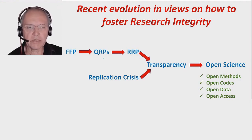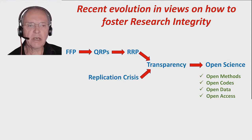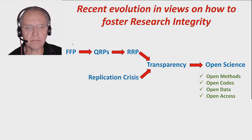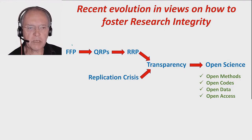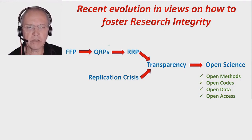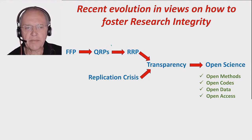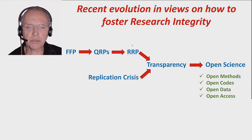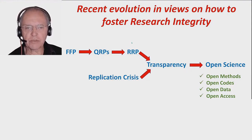And then we sat together and said, well, prevention of questionable research practices is a really important thing to do, although we should never stop detecting the culprits and the rotten apples doing the FFP. But there is also something going on in the aggregates, and we should cure that as well. And then the last few years, the emphasis shifted again a little bit to responsible research practices, that used to be called responsible conduct of research.